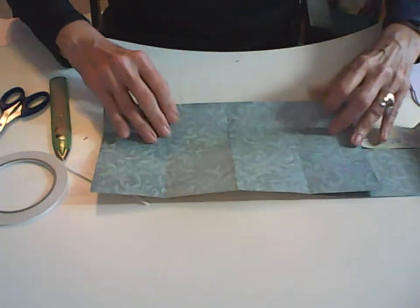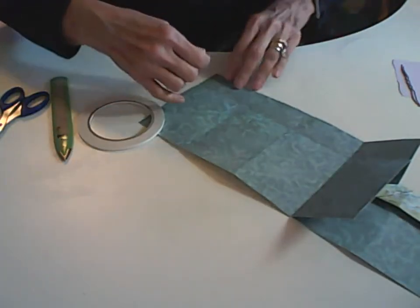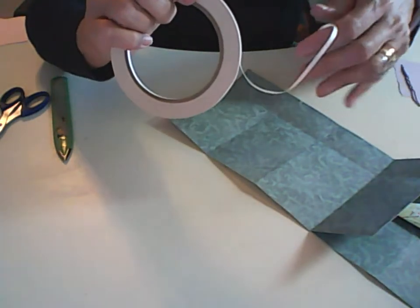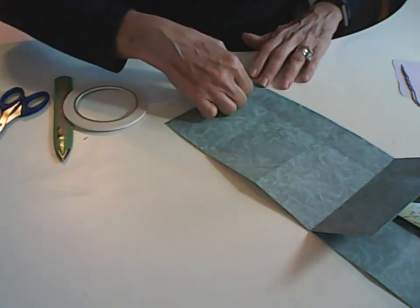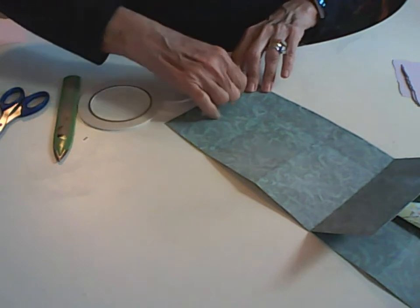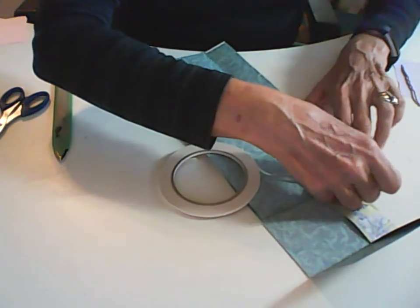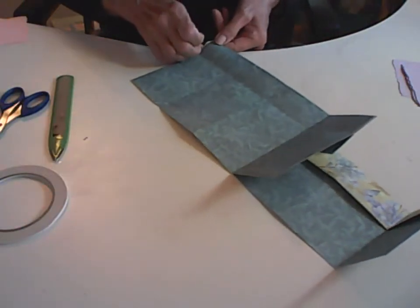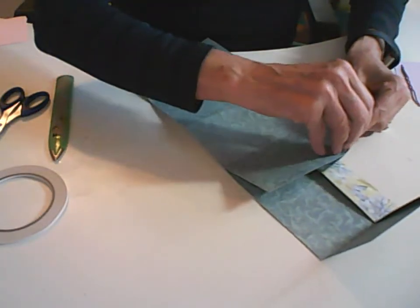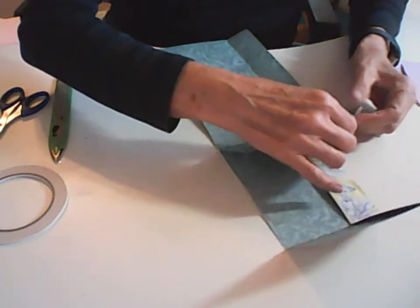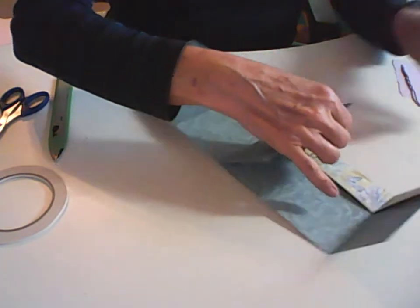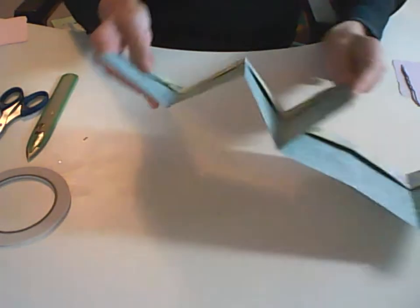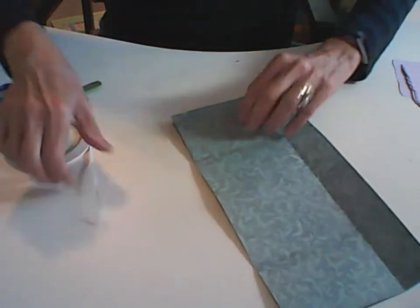What you also want to do on each side on your pocket is, and this is why I like this kind of score tape. You can use your liquid, you can use whatever you want, but I like this because it's very narrow and you can put your little inserts in there pretty easily. So you go ahead and do that on that one.